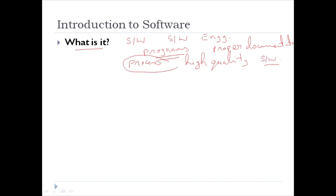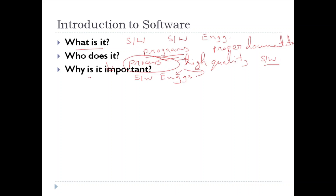So there are processes, a collection of methods, and an array of tools which provide professionals the ability to build high-quality software. The second question is: who does it? Software professionals, that is software engineers, build the software and provide support. The next question is why is it important. Software engineering affects nearly every aspect of our lives and enables us to build complex systems in a timely manner with high quality to solve real-life problems.